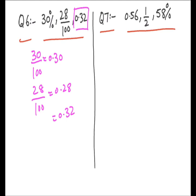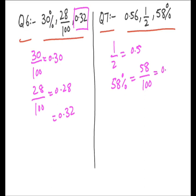Now we move to Question 7. Same technique: the first value is in decimal, second in fraction, third in percentage. You can convert all into decimal, fractions, or percentage — it's your choice. Converting to decimal: the first is already in decimal. The second is 1 over 2, which equals 0.5. The third is 58%, which is 58 over 100, equal to 0.58. Comparing 0.56, 0.50, and 0.58 — the smallest value is 0.50, meaning one-half is the smallest number in this sequence.